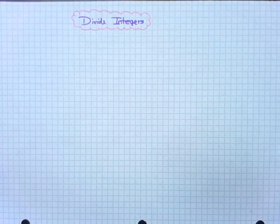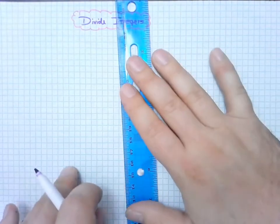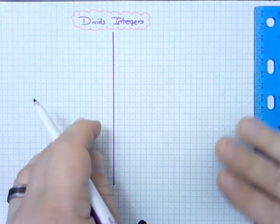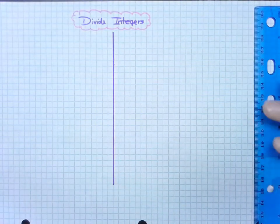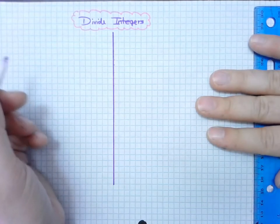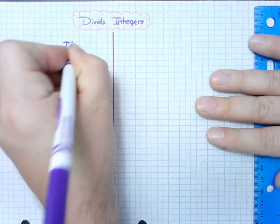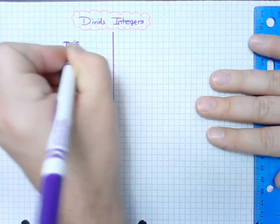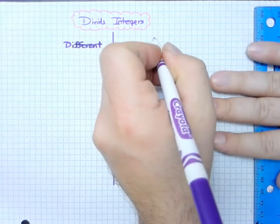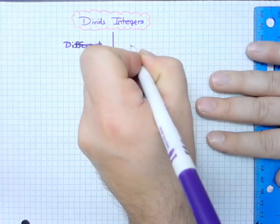Divide integers. Recall that dividing integers is similar to multiplying integers. We have a situation in which the signs are negative if they are different, and the solution is positive if they are the same.